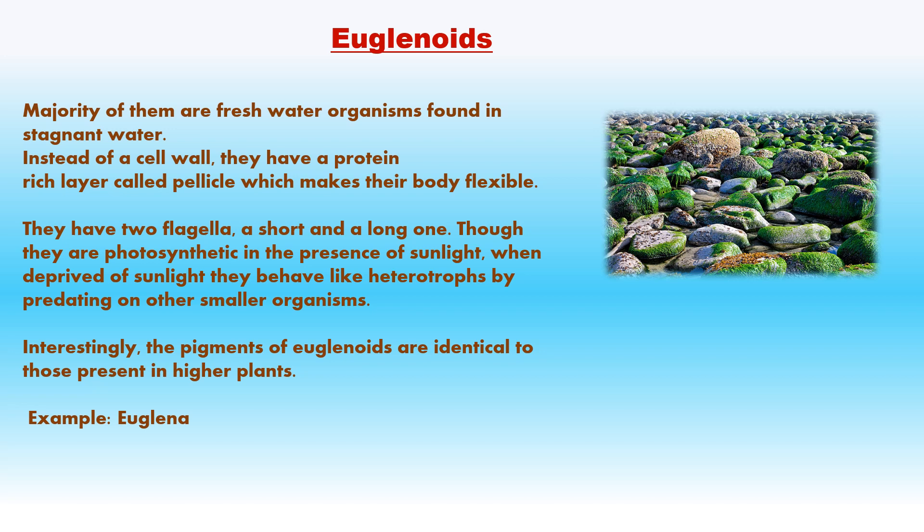Euglenoids are unicellular and free-living; majority are freshwater organisms found in stagnant water. Instead of a cell wall, they have a protein-rich layer called pellicle which is flexible and allows change in shape. They have two flagella — a short and a long one; the long flagellum helps in locomotion. They have chlorophyll and can photosynthesize. Though photosynthetic in sunlight, when deprived of sunlight they behave like heterotrophs by predating on small organisms. The pigment chlorophyll of euglenoids is identical to that in higher organisms. They reproduce asexually by longitudinal binary fission and by cysts during unfavorable conditions.